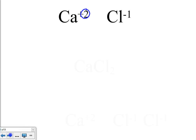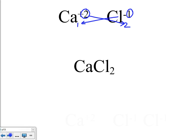The shorthand way to do this is to take the superscript from the cation — that is now going to become the subscript of the anion. And the superscript of the anion becomes the subscript of the cation. The 1 will disappear because we don't typically include those. So the final formula, rewritten nice and neat, is CaCl₂.